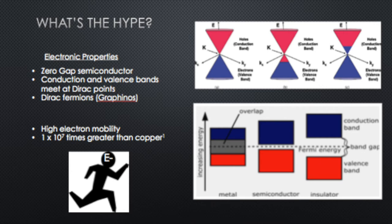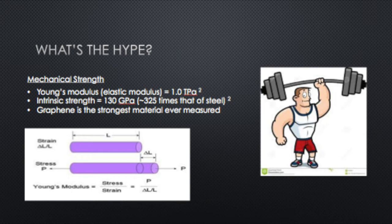Another property of graphene that scientists are freaking out about is its strength. Its elastic modulus and intrinsic strength are measured at one terapascal and 130 gigapascals respectively. These values mean that it's roughly 325 times the mechanical strength of steel. You think of steel as generally a very strong material that's hard to break, but graphene is 325 times stronger than that.